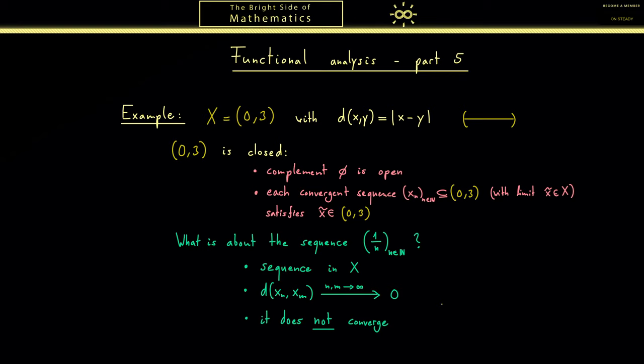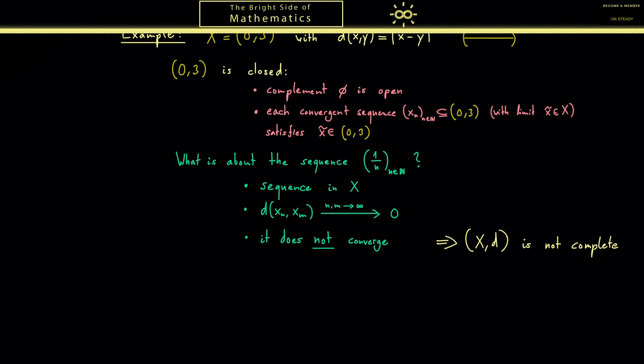So now we have to give a formal definition for a complete metric space. First, for a given metric space (X,d), sequences that fulfill this property here are called Cauchy sequences.